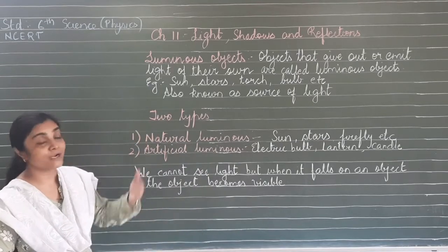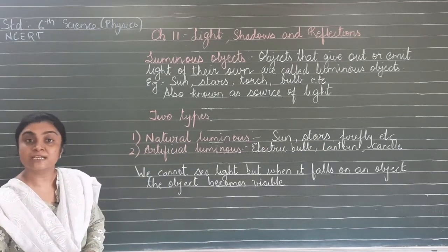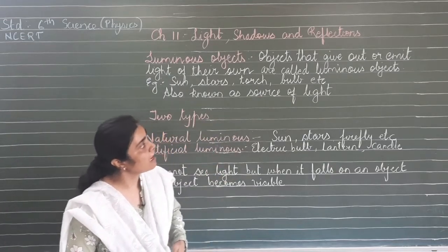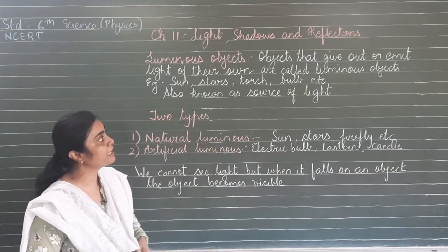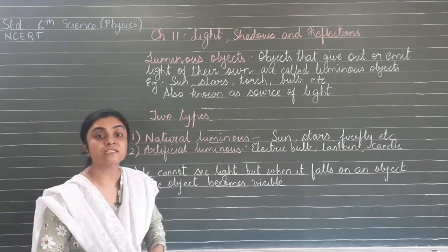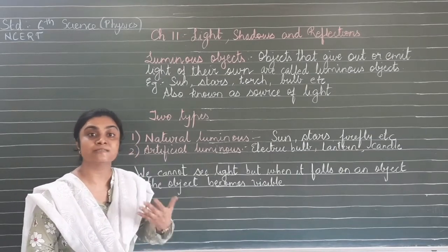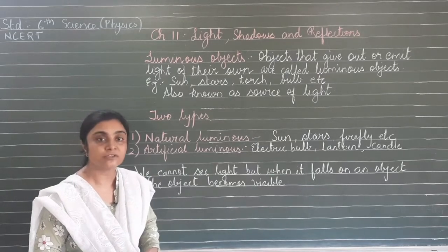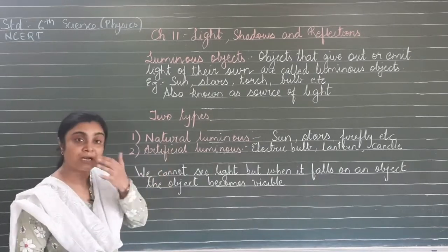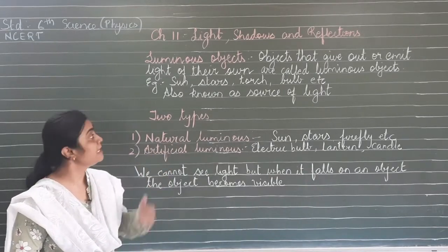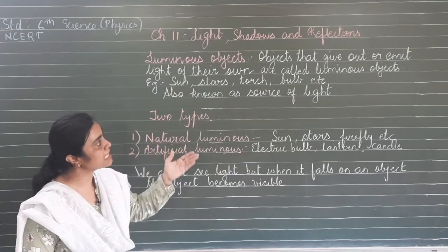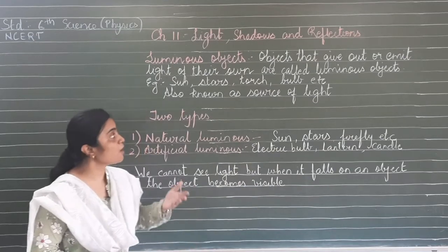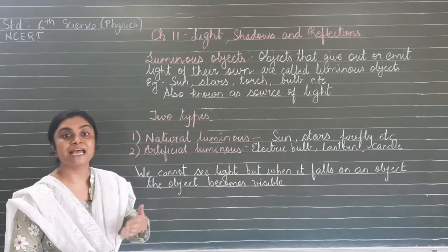Now let us see what are luminous objects and non-luminous objects. Luminous objects are objects that give out or emit light of their own. The objects which give light by themselves, which emit light - they are the source of light. Such objects are called luminous objects. Examples are sun, stars, torch, bulb, and candle - these are all luminous objects which emit light.